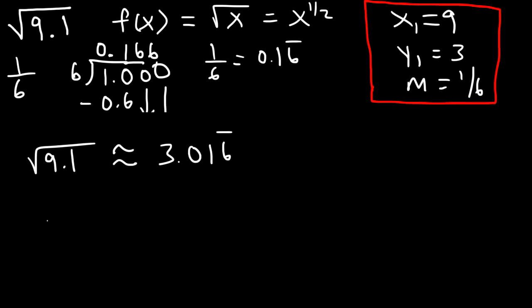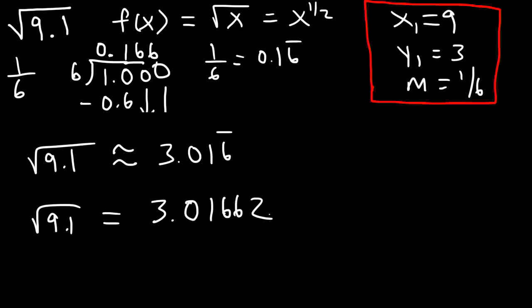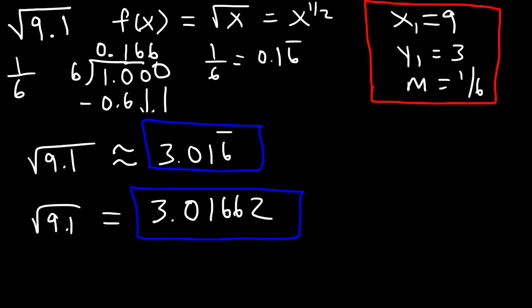Now let's get the exact answer using a calculator. The exact answer is 3.01662. These two numbers are very close, so the tangent line approximation is very useful for estimating things like the square root of 9.1 or 2.99 raised to the fourth power.